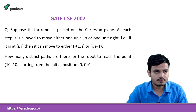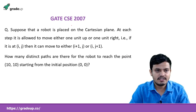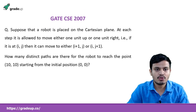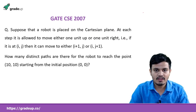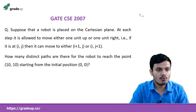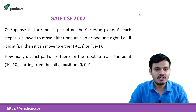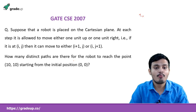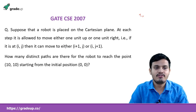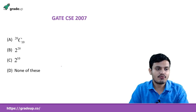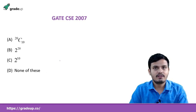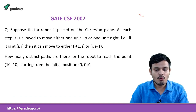This is the first question from GATE 2007. Suppose a robot is placed on the Cartesian plane. At each step, it is allowed to move either one unit up or one unit right. If it is at position (i, j), then it can move to either (i+1, j) or (i, j+1). How many distinct paths are there for the robot to reach the point (10, 10) starting from the initial position (0, 0)?